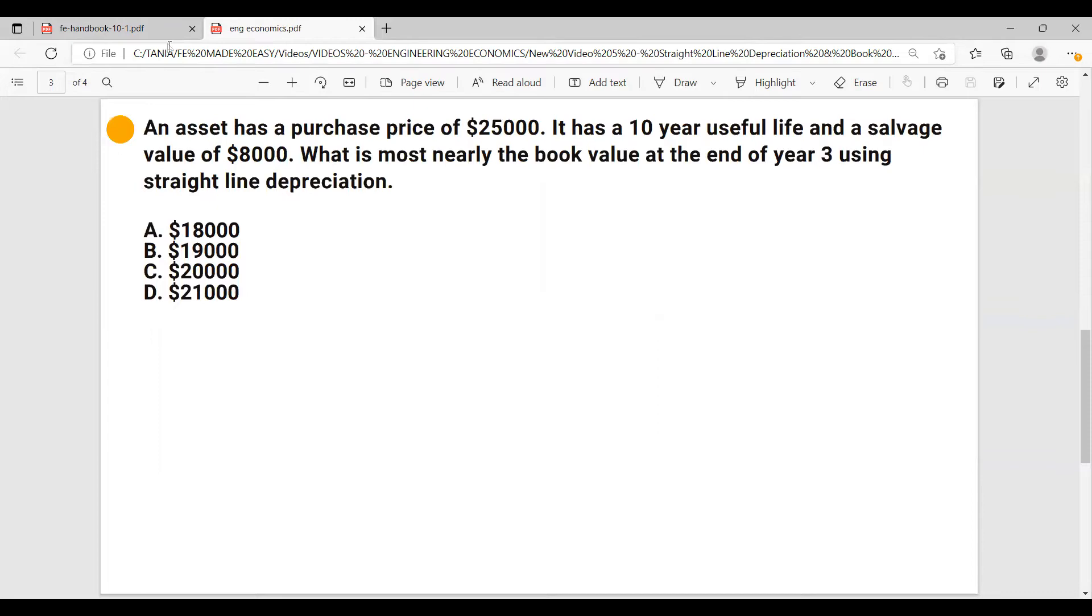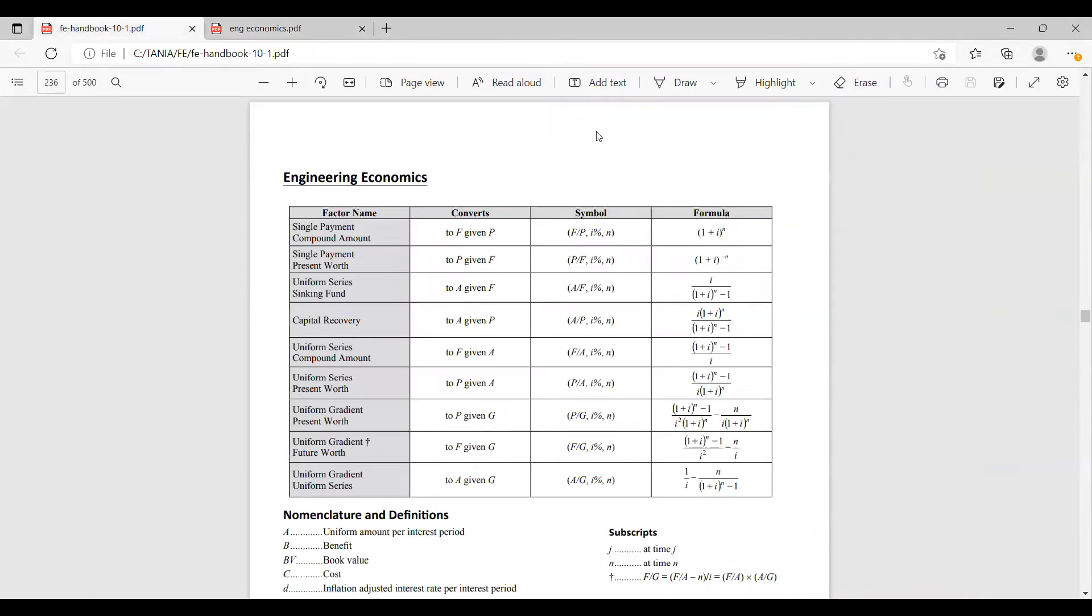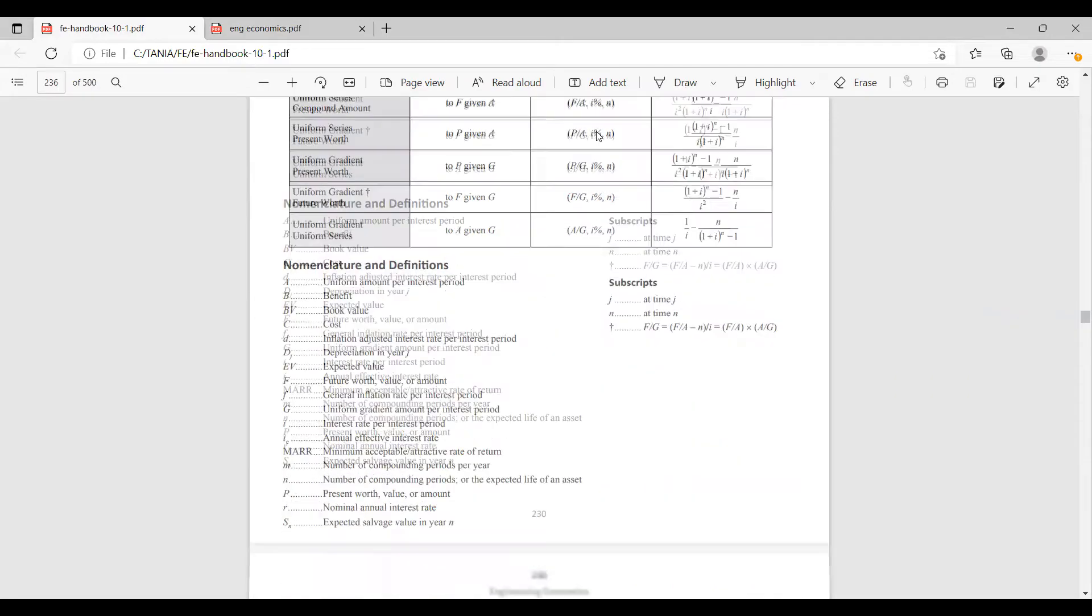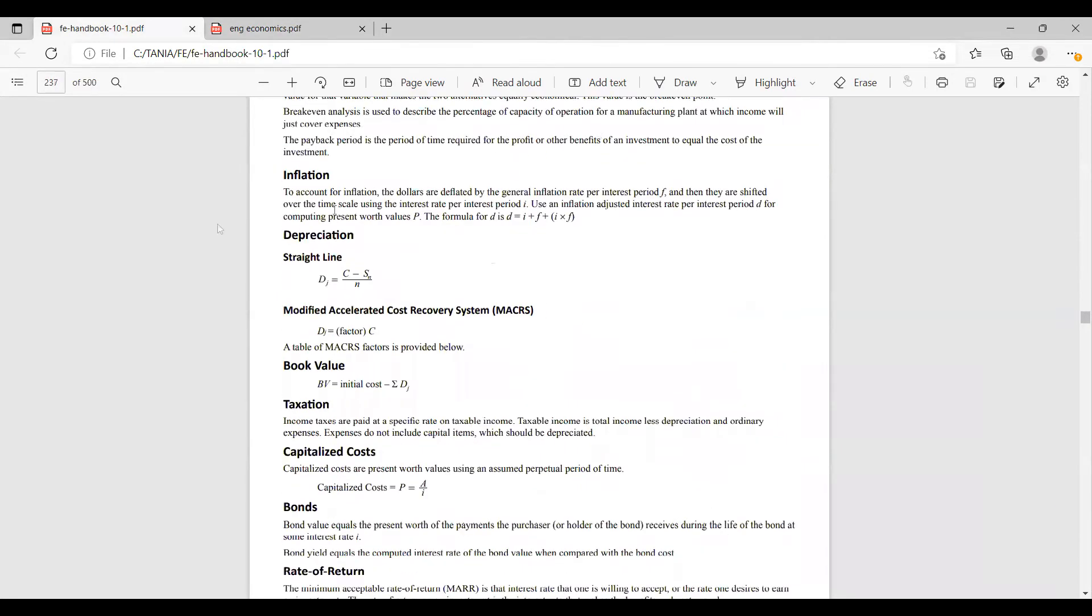So here I would suggest let's go straight to Engineering Economics FE Handbook and look for the formula for depreciation straight line and here it is. It's given in the handbook and depreciation at year j equals to the cost minus salvage value over the lifetime of the project number of years. And then book value equals to initial cost minus the depreciation.